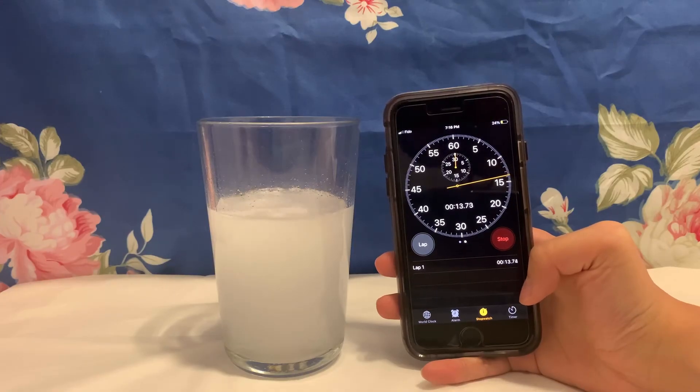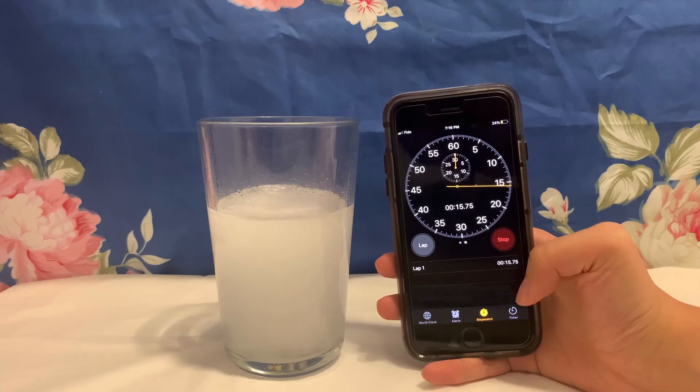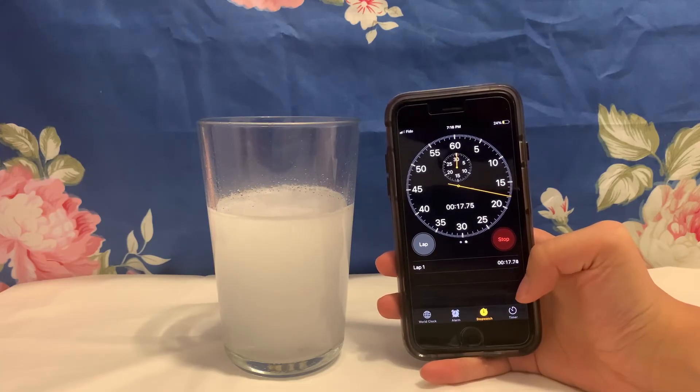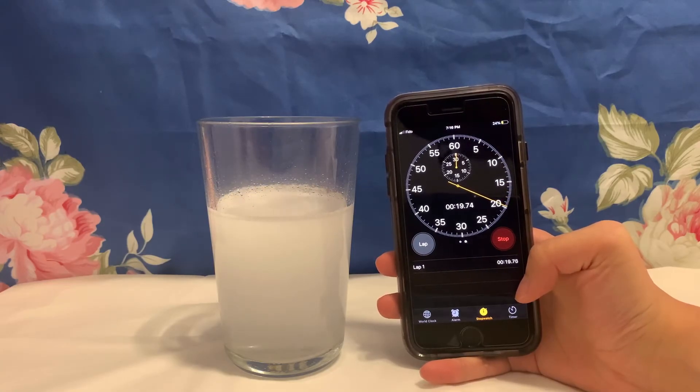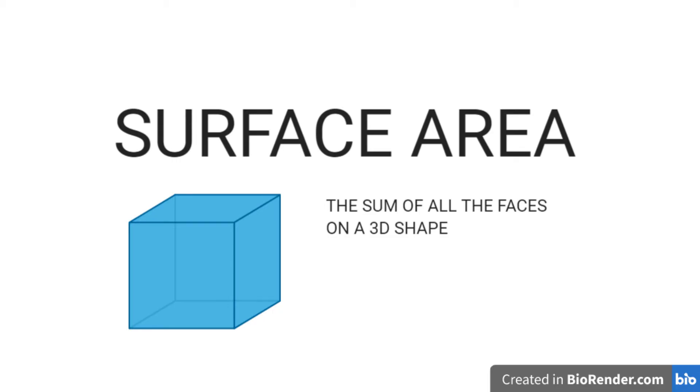Let's go back to the topic of the Alka-Seltzer tablet's rate of reaction. The reason why the powder form of the tablet was able to dissolve faster was due to the increase in surface area. Surface area is the sum of all the faces on the three-dimensional shape. By decreasing the size of a reactant, the surface area will increase, raising the chances of particles colliding with each other, making the rate of reaction faster.